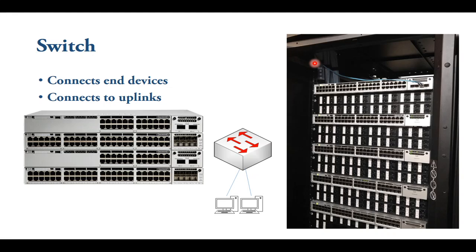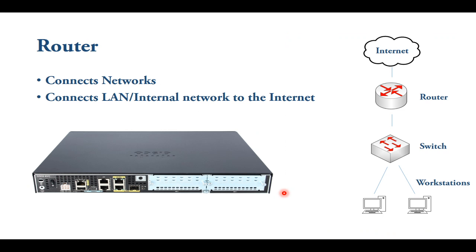That uplink connects all devices to the internet. The routers — this is an example of a Cisco router. The router connects networks together, or connects the local area network (LAN) or internal network to the internet. Typically on a router, you have a connection to the internal network and to the switch and workstations, and also a connection to the internet.